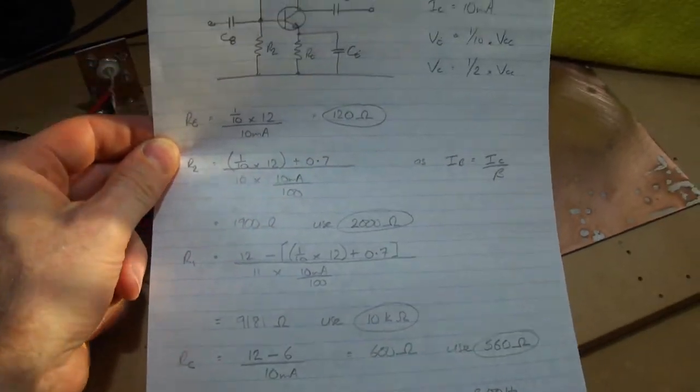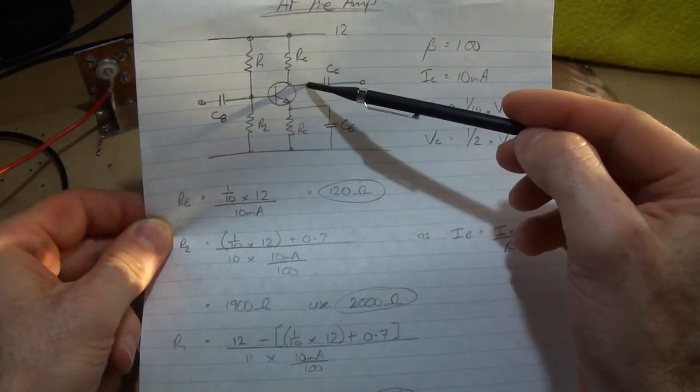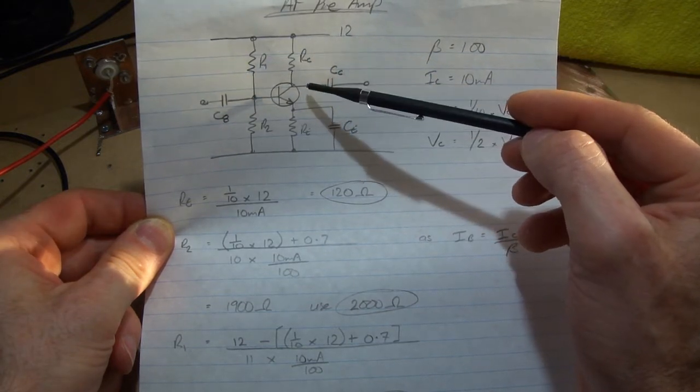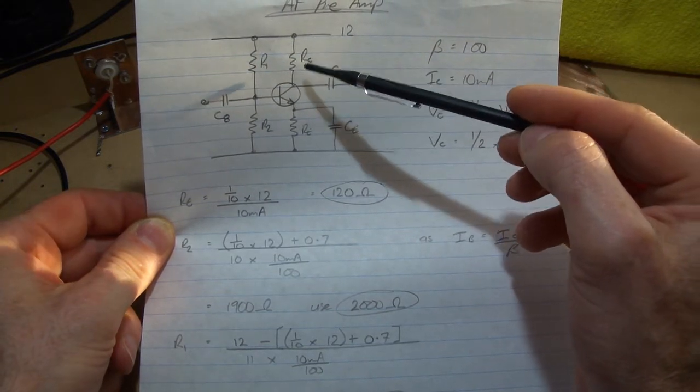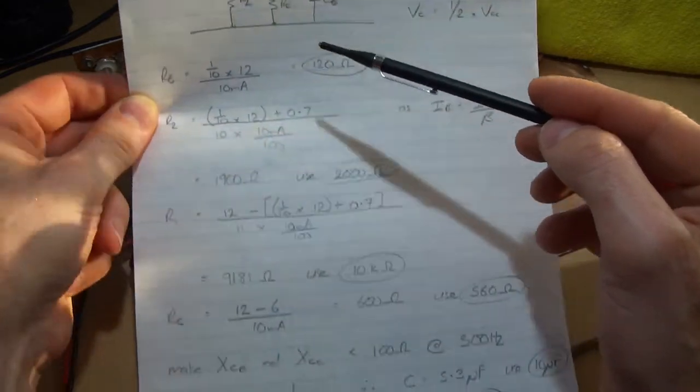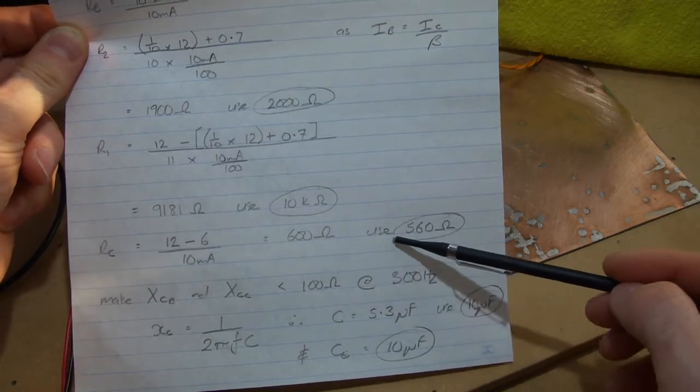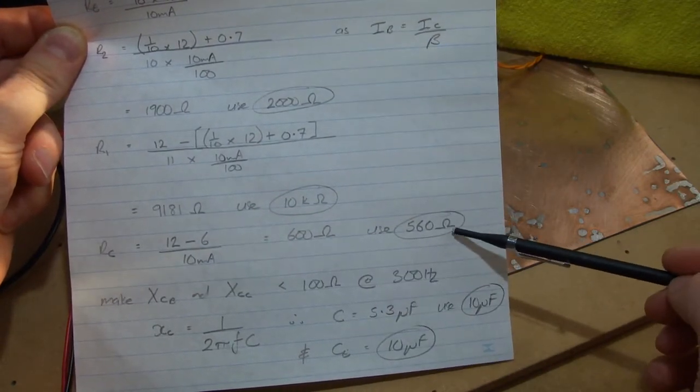The collector resistor, we said that we want to set this for half or 6 volts, so the voltage drop across that will be 6, and 6 divided by that 10 milliamps going through comes out to be 600 ohms. So we'll use the closest standard value, we'll use 560.